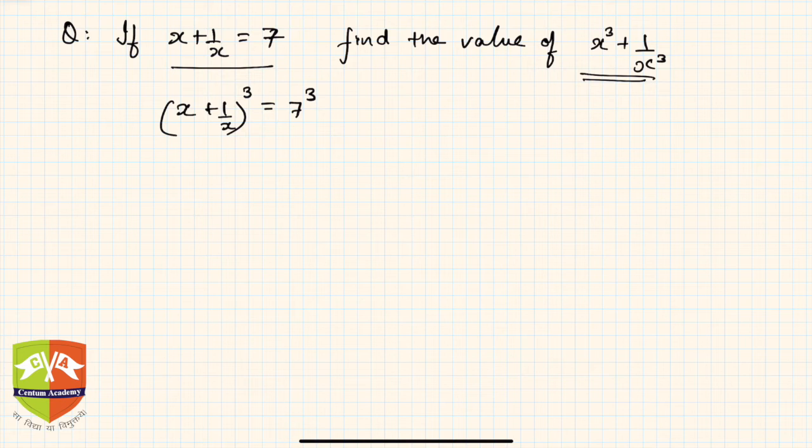So if I do x plus 1 by x whole cube, I'll get 7 cube. So let's expand using the identity. The identity which we have is a plus b whole cube equals a cube plus 3a squared b plus 3ab squared plus b cube.